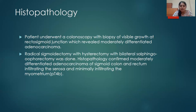She underwent a radical sigmoidectomy and hysterectomy with bilateral salpingo-oophorectomy. Histopathology confirmed moderately differentiated adenocarcinoma of the sigmoid colon and rectum infiltrating the serosa as well as the myometrium, which was a pathological T4B.